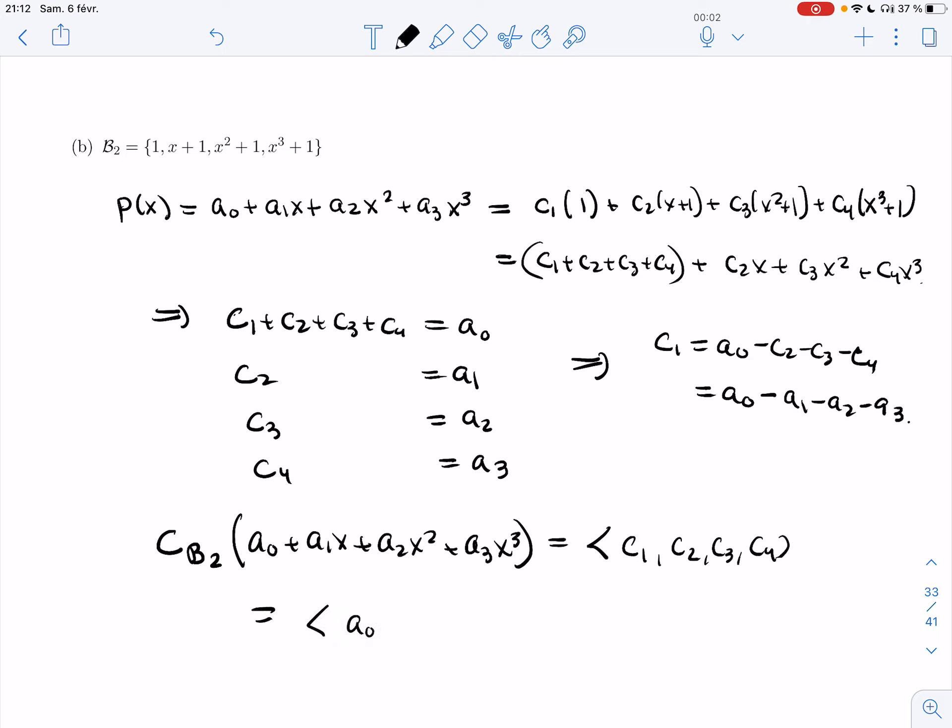And so C₁ we said was a₀ - a₁ - a₂ - a₃, and then the other ones are just a₁, a₂, a₃.